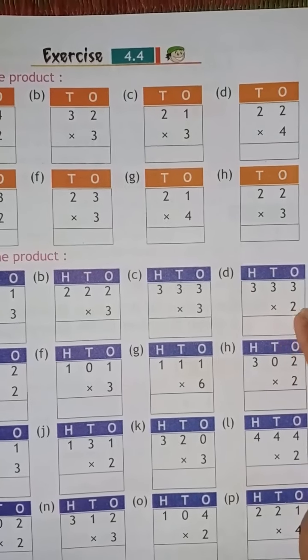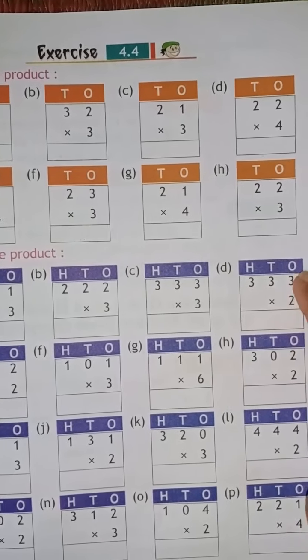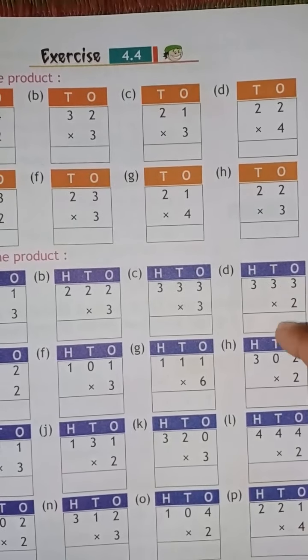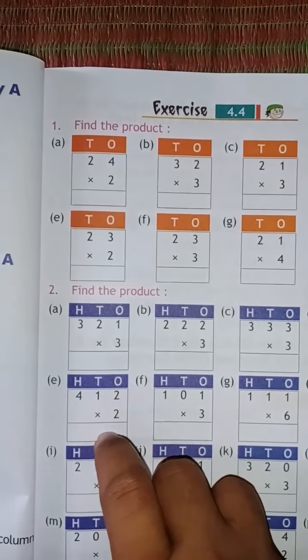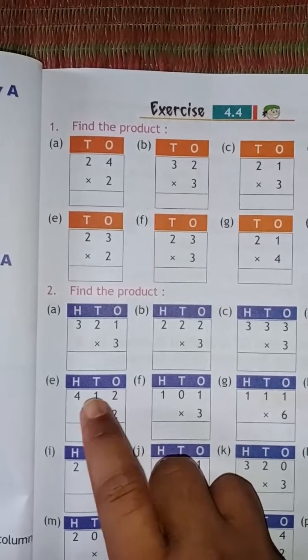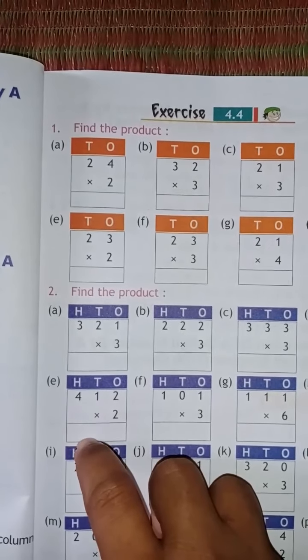Good morning students, today we are going to start our math class page number 81, Exercise 4.4 number 2. Find the product: hundreds, tens, or ones. Number a: 3, 1, 0, 3. Number b: 3, 2, 0, 6. Number c: 3, 3, 0, 9. Number d: 9, 6, 3.